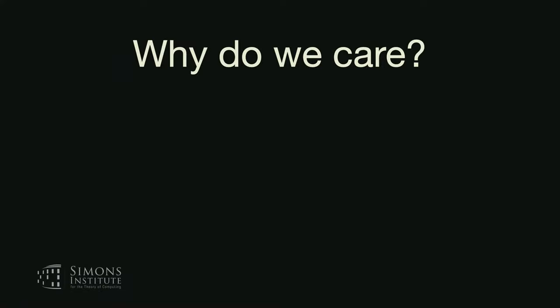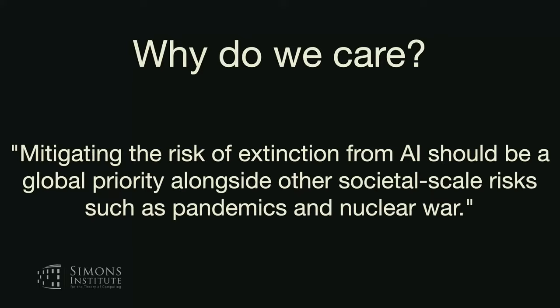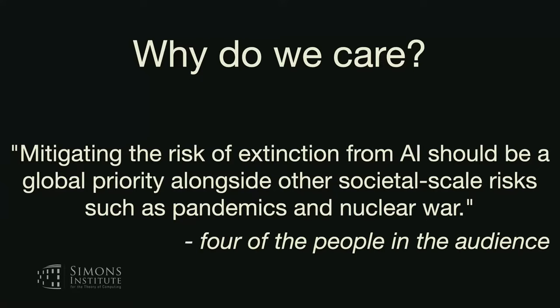Why do we care about this helpful/harmless property? There's the broad alignment concern — a quote from Dan Hendricks about AI being on the level of other existential risks, and at least four people in the audience have signed that statement. But also, ideally we don't want these models swearing at people and doing things we'd all agree are just not nice. We all agree swearing is bad, but whether these models can cause extinction is a separate question.